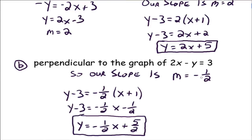Moral of the story: in order to find the equation of a line, you must know the slope of your line. If slope is not automatically given to you, you must have enough information to go find it. Then all you need is one point that lies on your graph, and you can find the equation of that line. Study well, and please let me know if you have any questions.